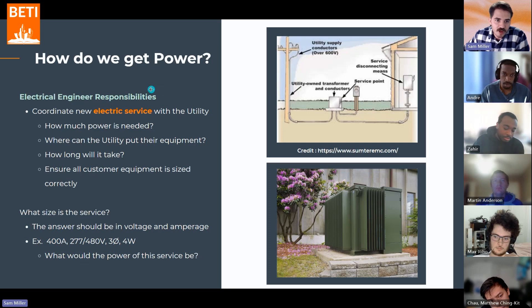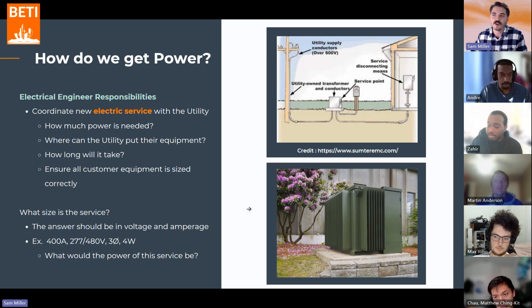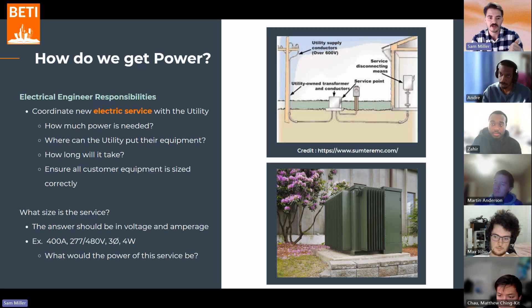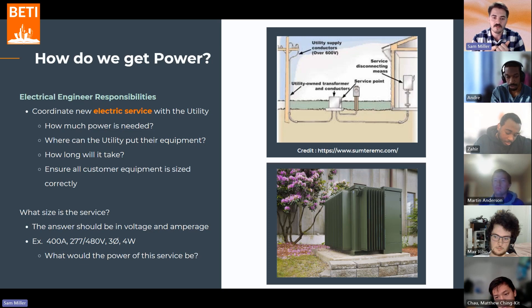When I say electric service, the measurement of an electric service should be in voltage and amperage. Early in my career my boss asked me what the size of the electrical service was and I didn't know how to respond, even with the drawings in front of me. The electric service tells you how much power the customer is getting, and that should come in the form of amperage and voltage. The power equation is: power equals voltage times amperage. If you give voltage and amperage, they can tell how much power there is — but if you just give power, they don't know what the voltage and amperage split is.